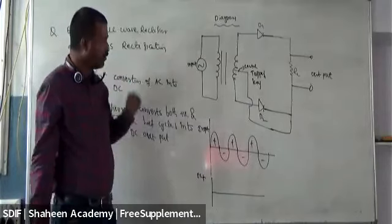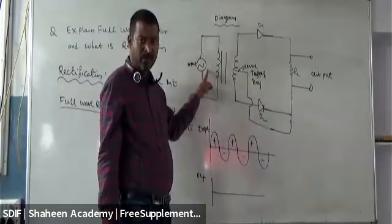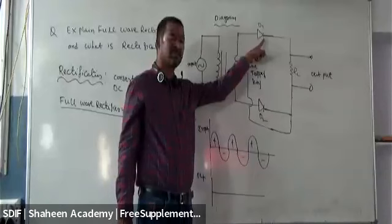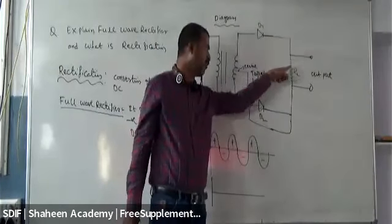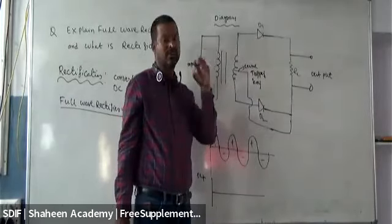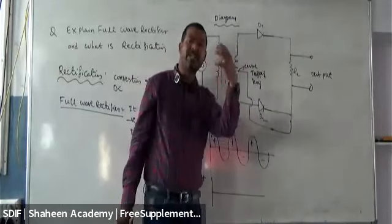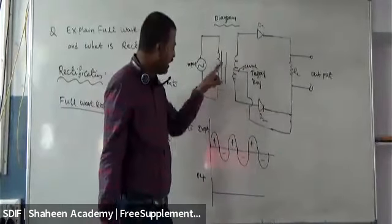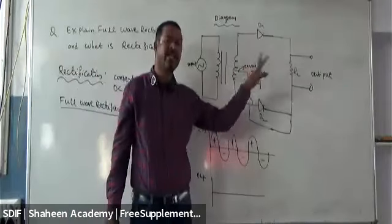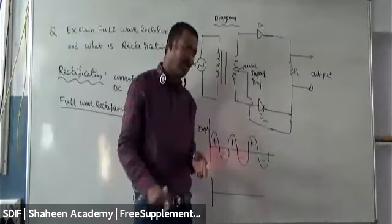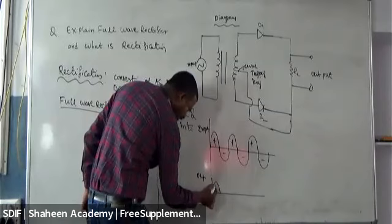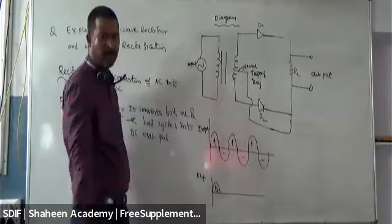When the positive cycle is entered as input, D1 will be in forward bias. Whatever current flows through the forward-biased D1 passes through the load resistor RL, so we get output from RL. D2 is in reverse bias and will not allow any current, so D2 will not provide any output. Finally, we get an output from D1 only.